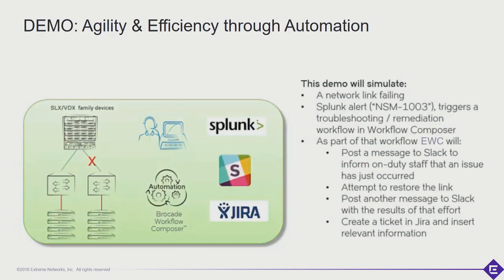With that said, let's go into a short demo video. What this video is going to show is a port going down, then attempting to remediate the problem, webhooks into applications posting a Slack message, and then posting a Jira trouble ticket — all triggered by a single event of a port going down, without any human intervention. This is cross-domain automation.